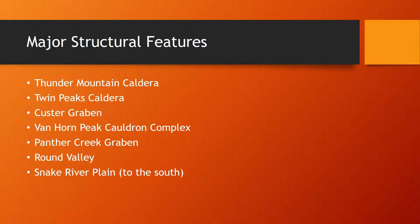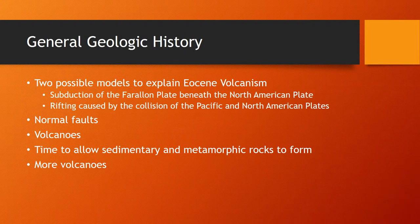Looking at the major structural features in the area, we notice it's dominated by volcanoes. We see the Thunder Mountain caldera, the Twin Peaks caldera, and the Van Horn Peak cauldron complex. We also see features not directly related to volcanoes, like the Custer Graben, Panther Peak Graben on the other side, Round Valley, and the Snake River Plain to the south.